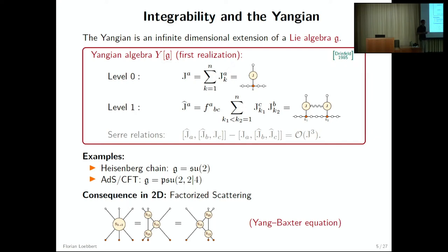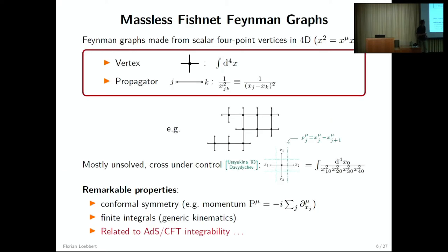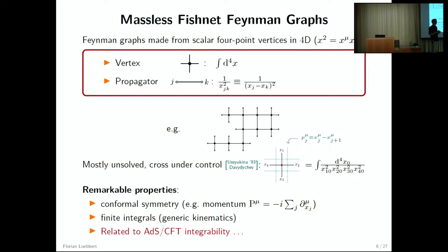Typically, before Yangian symmetry was investigated in the context of 2D spin chains and 2D field theories, the consequence was that the scattering matrix in these field theories or spin chains factorizes. So let me now tell you about this connection to Feynman integrals.